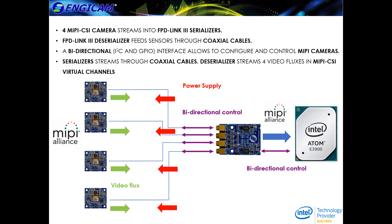The deserializer streams video fluxes over a MIPI CSI2 interface and the Apollo Lake base board acquires multimedia data. Apollo Lake can control the deserializer via I2C interface, and the deserializer forwards I2C communication to the MIPI cameras.